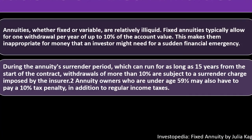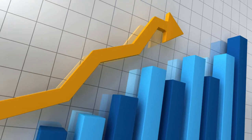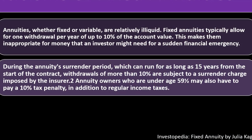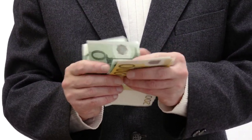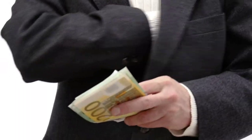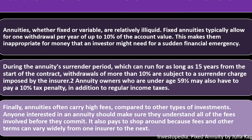During the annuity surrender period, which can run for as long as 15 years from the start of the contract, withdrawals of more than 10 percent are subject to a surrender charge imposed by the insurer. Annuity owners who are under age 59 and a half may also have to pay a 10 percent tax penalty in addition to regular income taxes. The tax deferral benefit comes with a cost — the IRS penalizes early withdrawals because the deferral is intended to discourage pulling money out before retirement.